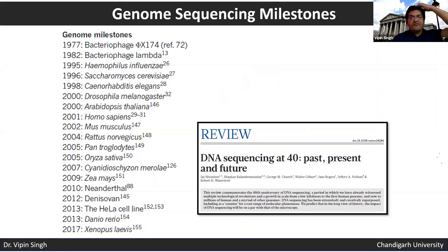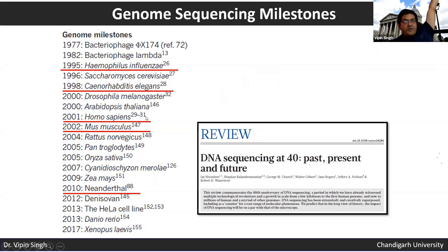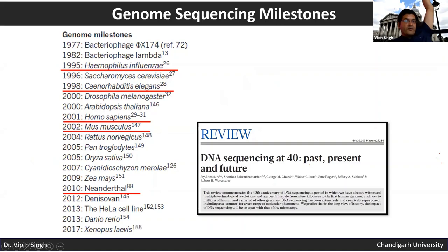Looking at genome sequencing milestones: the first genome sequenced was bacteriophage φX174 in 1977, then Haemophilus influenzae, and there have been continuous achievements since. The crowning glory was the human genome sequence in 2001. We can now also sequence DNA from ancient organisms such as the Neanderthal, our closest human relative.